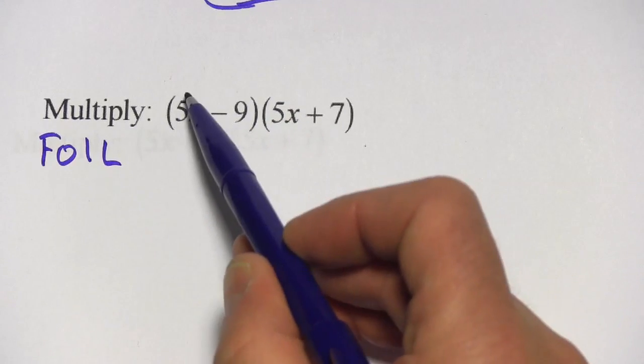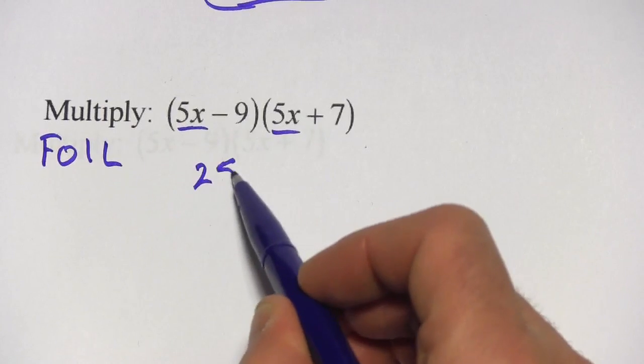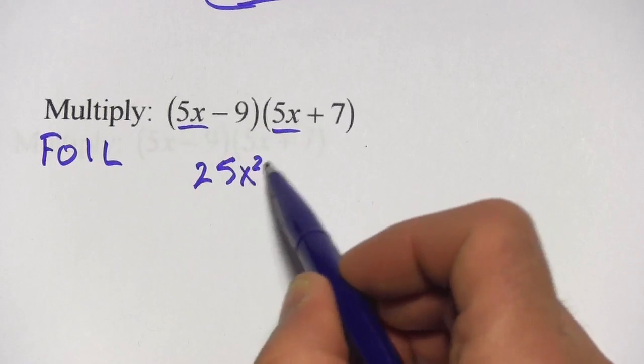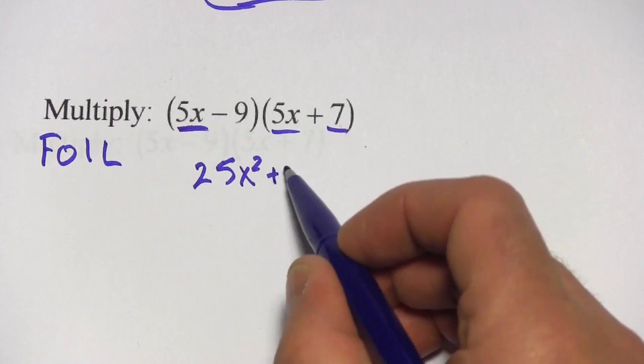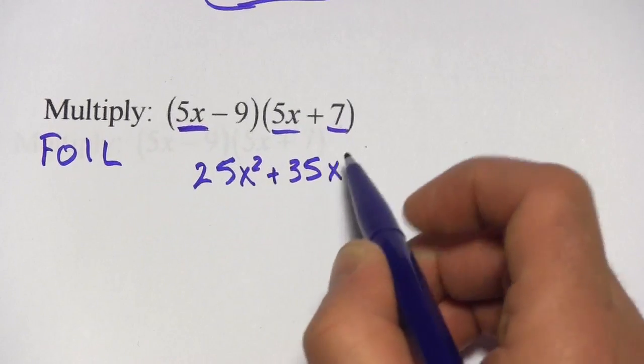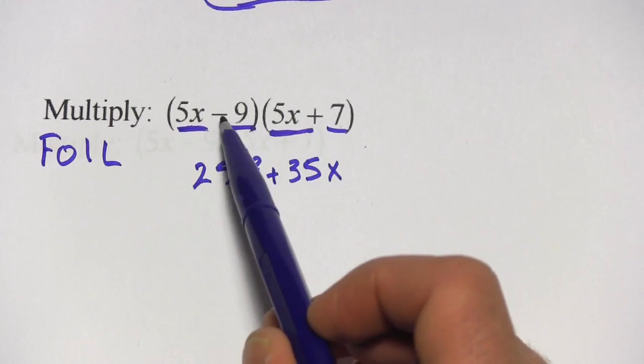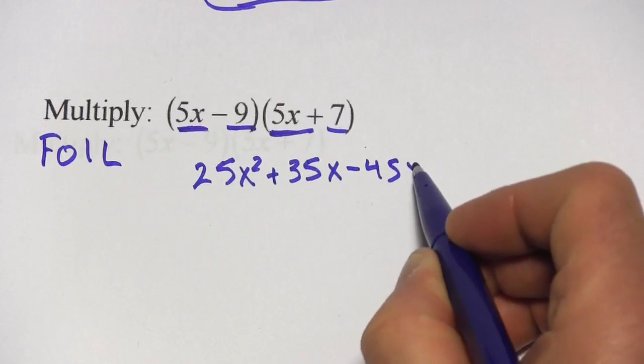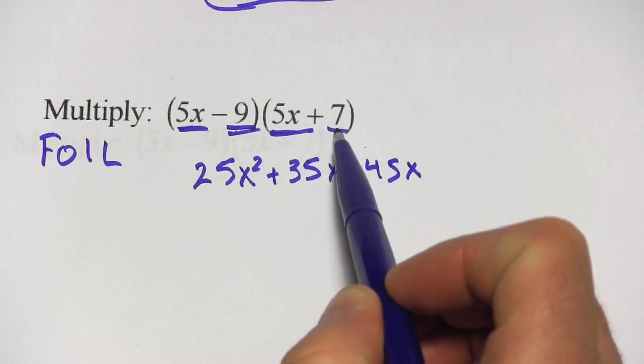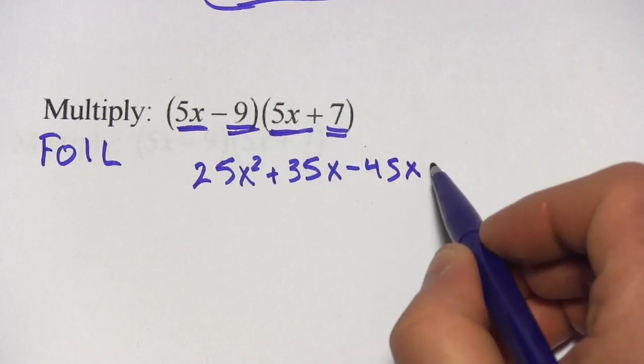So first, that's 5x times 5x. 5 times 5 is 25, x times x is x squared. Outside, that's 5x times 7. That's plus 35x. Inside, negative 9 times 5x. That's going to be a negative 45x. And the last terms are negative 9 and a positive 7. So that's going to be a negative 63. So there's our foiling.